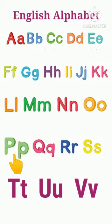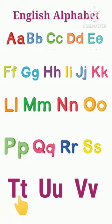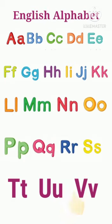Capital P, small p, p. Capital Q, small q, q. Capital R, small r, r. Capital S, small s, s. Capital T, small t, t. Capital U, small u, u. Capital V, small v, v. Now we recognize these letters.